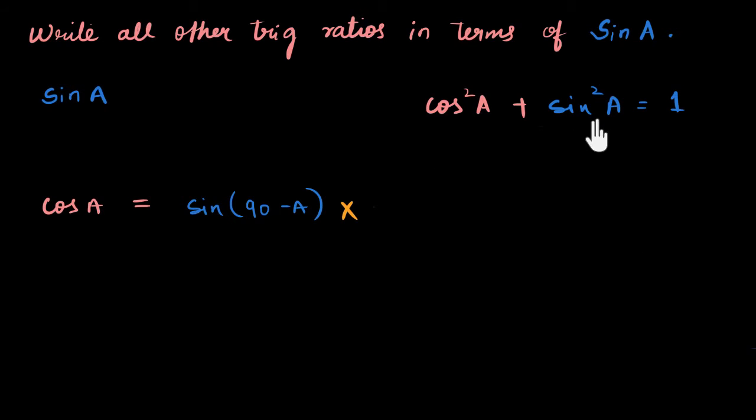So I'm going to subtract sin² A from both sides. So I have cos² A on this side, and that's equal to 1 - sin² A, subtracting sin² A on both sides. And now, what is cos A? Cos A is going to be—that's right—cos A is just root over, root over, 1 - sin² A.